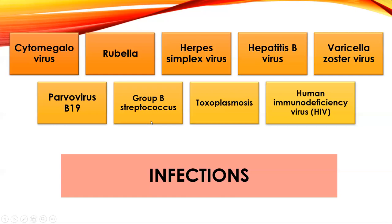The more antibiotics we use, the faster these bugs develop the ability to become superbugs and become antibiotic resistant. The current practice is to treat everybody who is GBS positive with antibiotics in labor, though this may not be the practice forever.